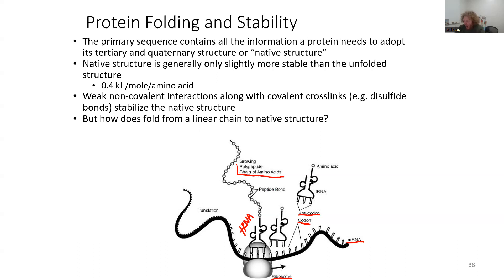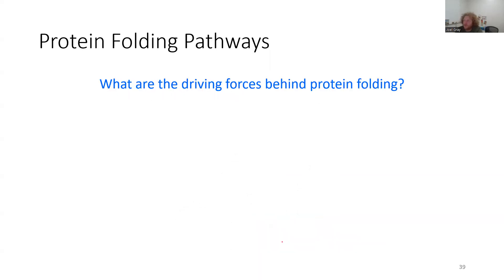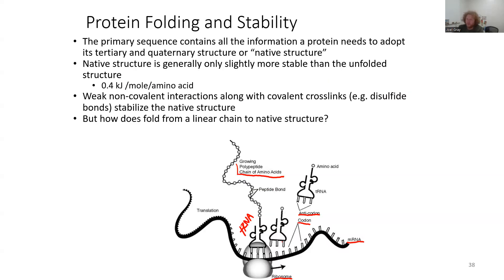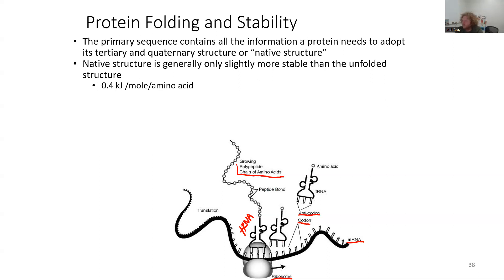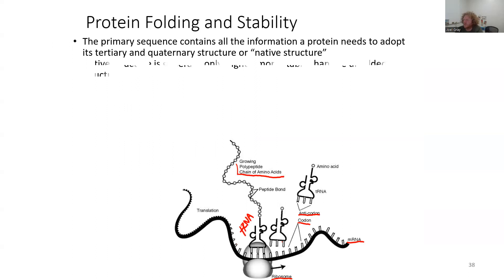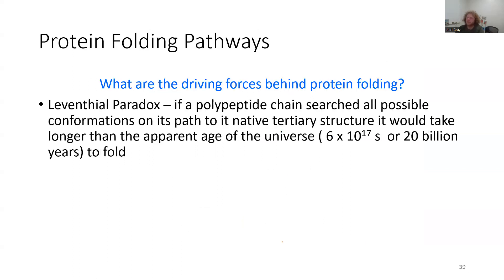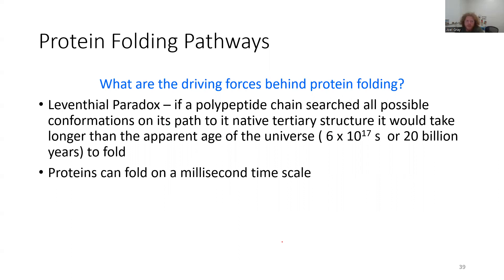But how does a protein fold from a linear chain to a native structure? There's the Levinthal paradox: if a polypeptide chain searched every possible conformation on its path to its native tertiary structure, it would take longer than the apparent age of the universe to fold. A protein doesn't get folded by contorting itself into all possible permutations — that would take too long. Proteins can fold and reach their native structure on the millisecond timescale.